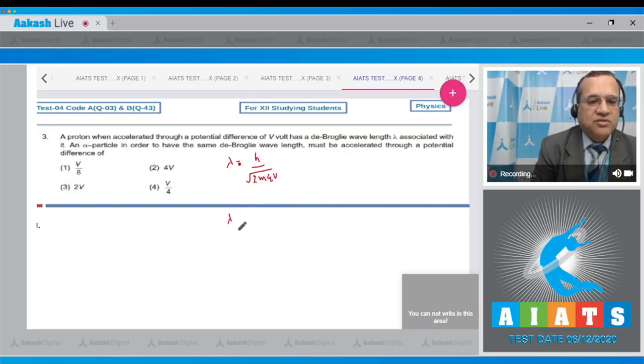Now the wavelength of the proton should equal the wavelength of the alpha particle. So H divided by square root of 2 times mass of proton times charge of proton times potential equals H divided by square root of 2 times mass of alpha particle times charge of the alpha particle times potential V prime.